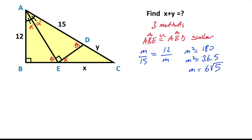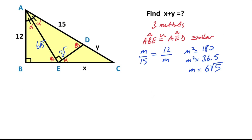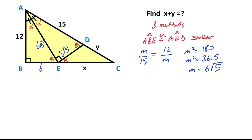Let's write here m equals 6 root 5. Therefore for this triangle, if you apply the Pythagorean theorem, you find this side to be 3 root 5 units. And also if you apply the Pythagorean theorem for this triangle, you find this side to be 6 units.